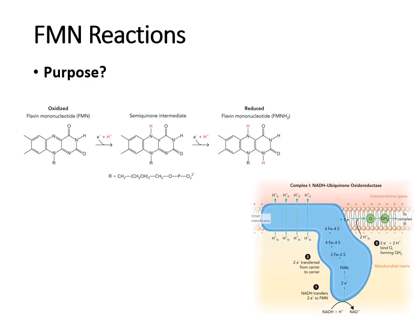FMN, which stands for flavin mononucleotide, is a form of vitamin B2. FMN can be reduced one electron at a time, allowing it to serve as a carrier passing electrons from NADH to ubiquinone. Since FMN accepts electrons while NADH loses them, FMN is what oxidizes the NADH and ultimately transfers those electrons to ubiquinone.